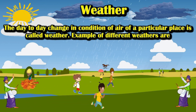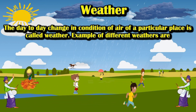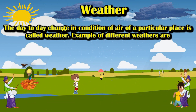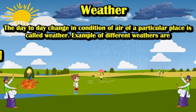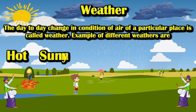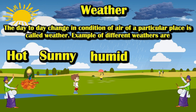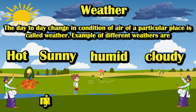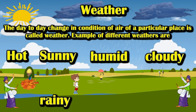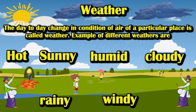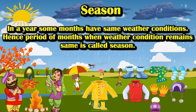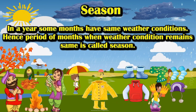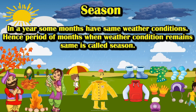Weather: the day-to-day change in condition of air of a particular place is called weather. Examples of different weather are hot, sunny, humid, cloudy, rainy, and windy.